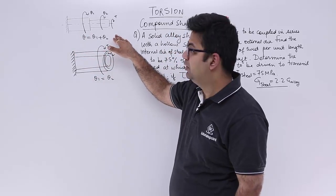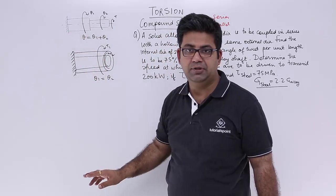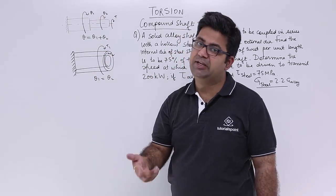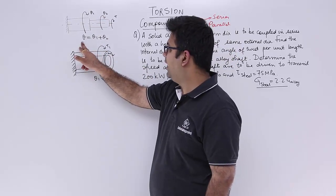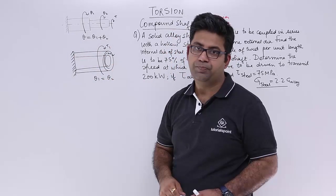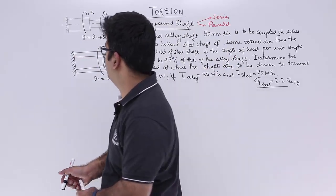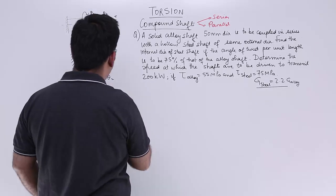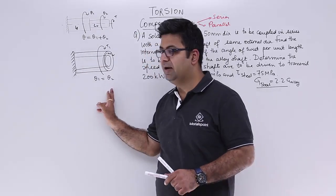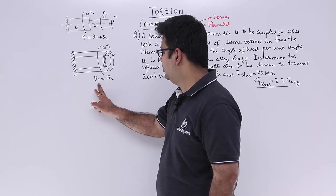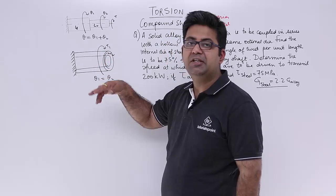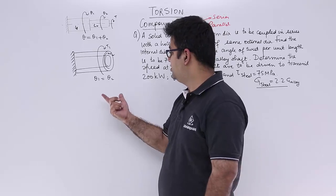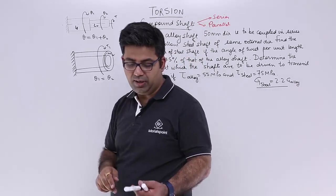In a series combination of shafts, the torque transmitted by both shafts is the same, so T is the same. But the angle of twist is different for each shaft, so the total angle of twist equals theta1 plus theta2, with different lengths L1 and L2. In parallel, the angle of twist is the same but the torque transmitted by each shaft is different, so T1 is for the first shaft and T2 is for the other, whereas theta1 equals theta2.